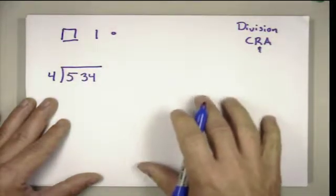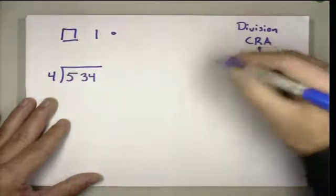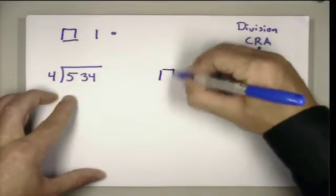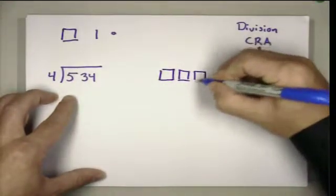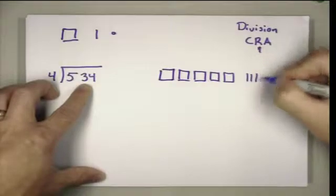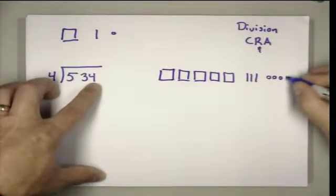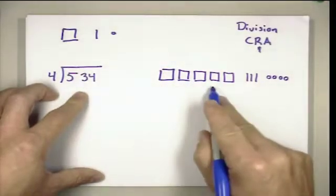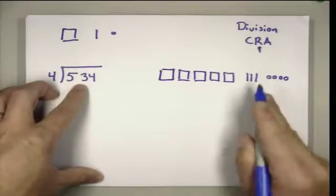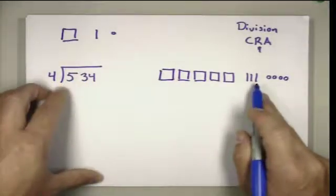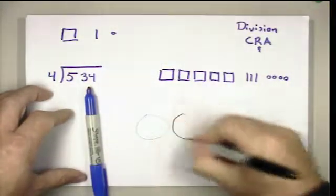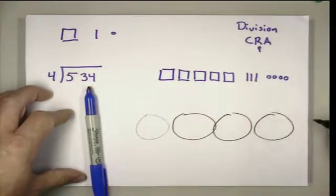How we would represent that with a picture would be to model 534 with our place value blocks. So that's five hundreds, three tens, and four ones. Now our task is to take this number and divide it by four, which means we're going to create four groups.